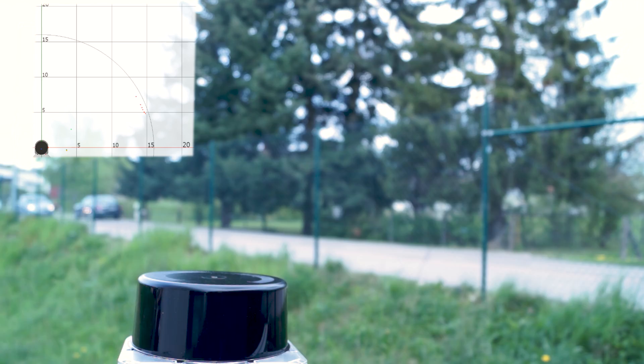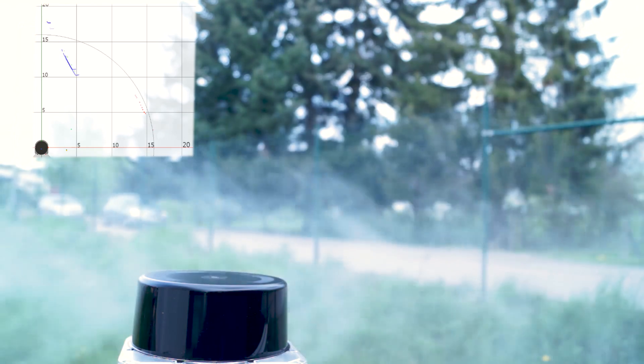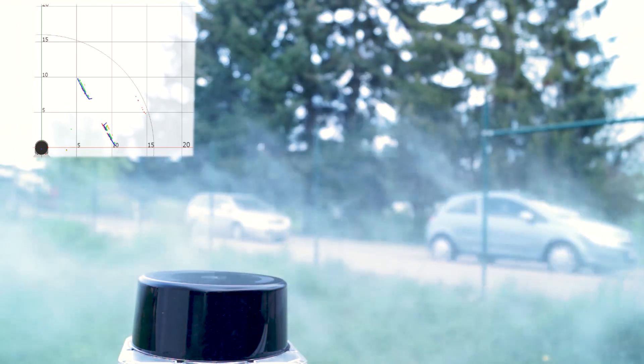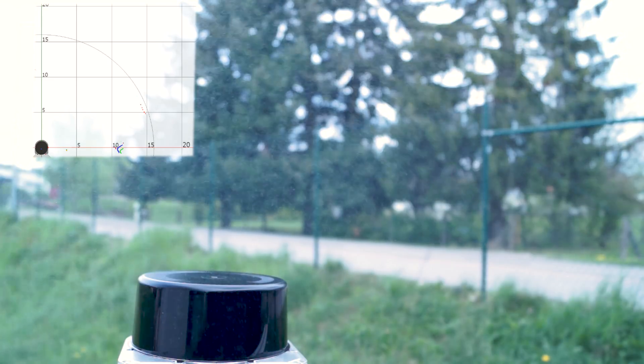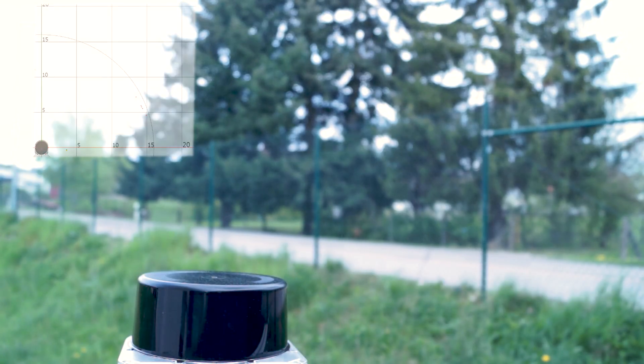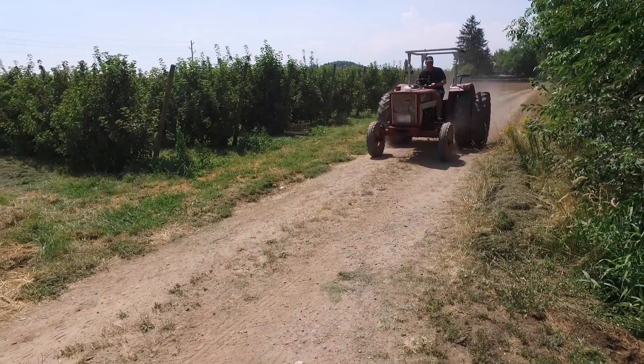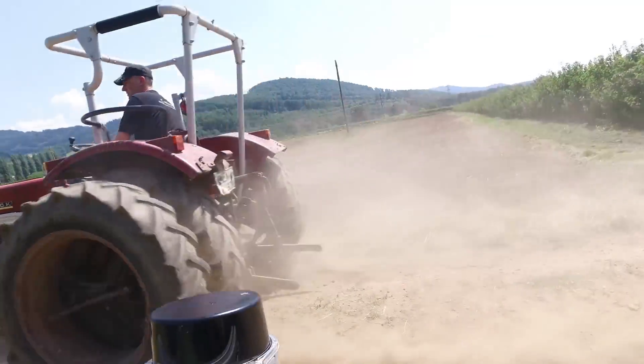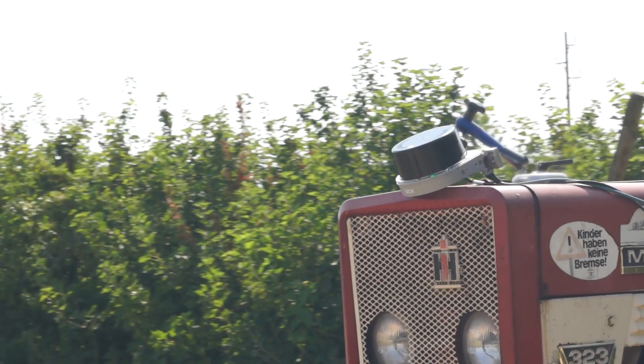The MRS1000 reliably detects cars even when rain, spray, or fences appear in the measuring area. The multi-layer technology allows you to realize a wide variety of applications in all types of surroundings. Even under harsh environmental conditions like in mining or agriculture, the MRS1000 works perfectly.